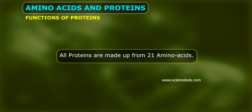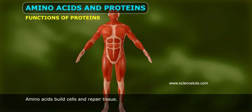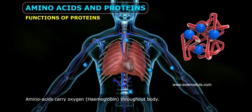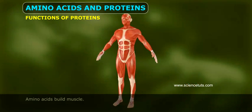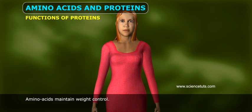All proteins are made up from 21 amino acids. The number of amino acids and their sequence makes all the difference between proteins and their functions. Amino acids build cells and repair tissue, carry oxygen via hemoglobin throughout the body, build muscle, and maintain weight control.